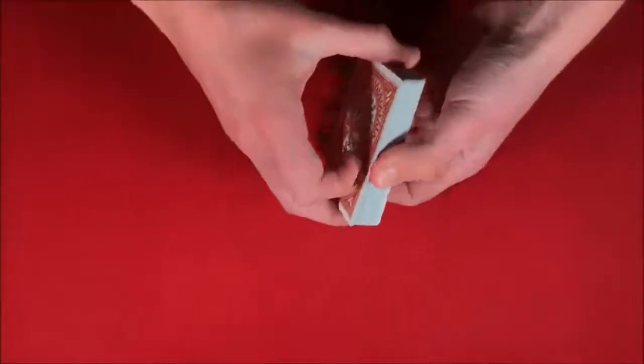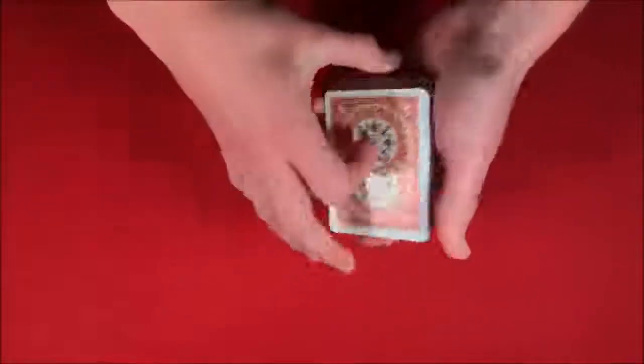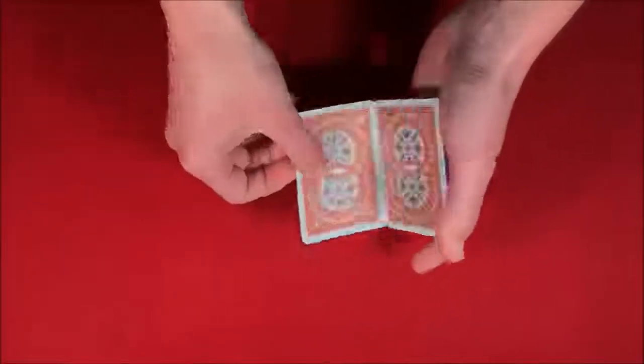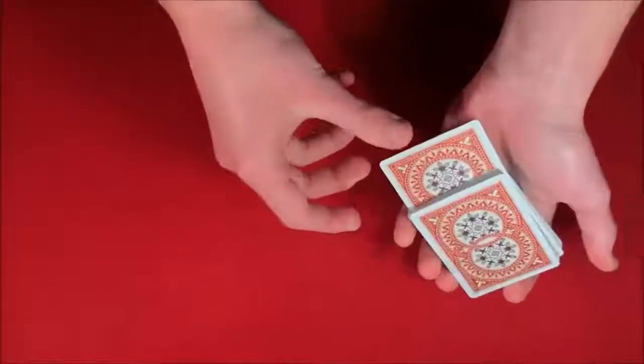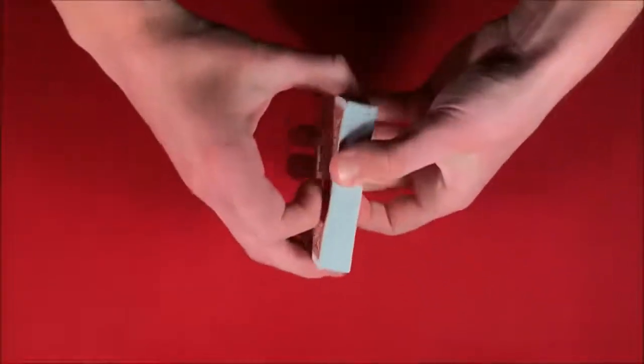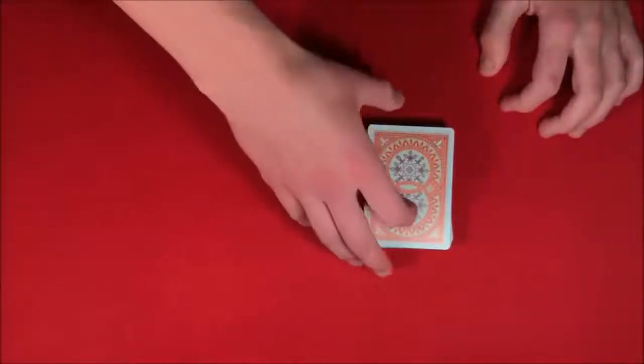Let's say you could have the spectator shuffle up the deck and then what you could do is you could tell them, let's say we take the top card - in this case the five of clubs - you tell them you're going to take the five, put it into the middle and you show them that you don't really know exactly where it is, it's somewhere in there.